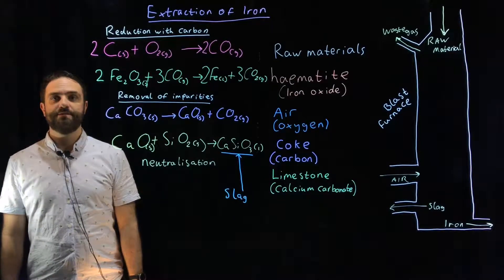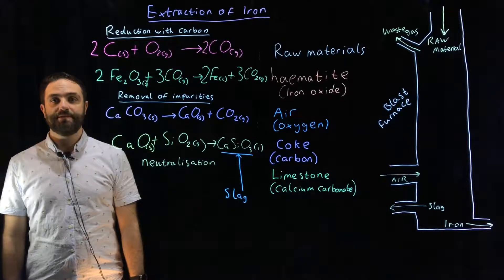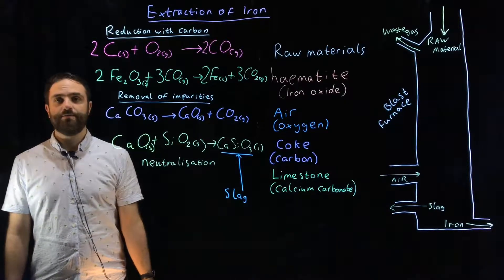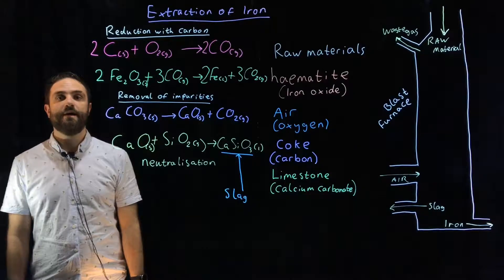Extraction of iron in the blast furnace. Iron is a very important material used in construction and many other industries. It's extracted from the ground in the form of hematite.